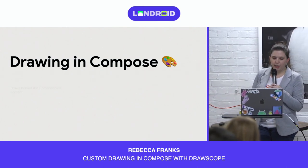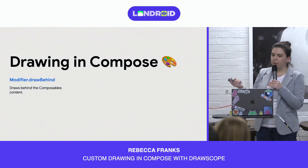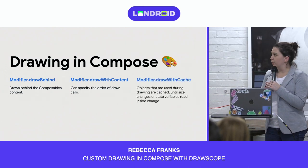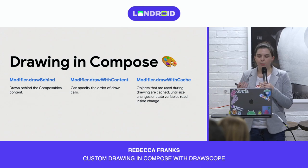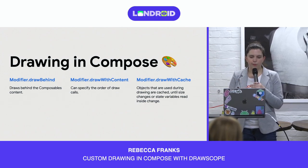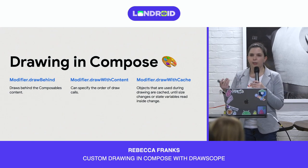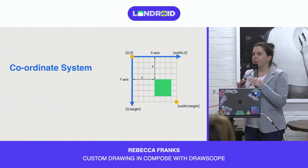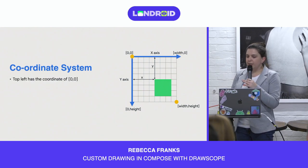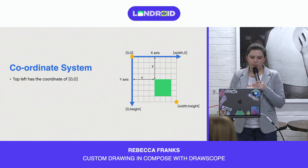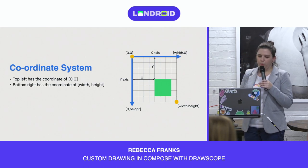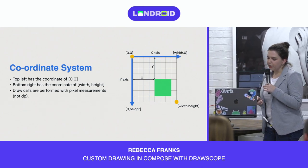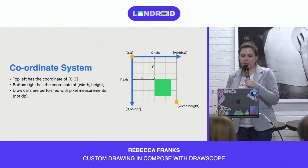Looking at these three modifiers: we have modifier.drawBehind, which draws content behind your composable; modifier.drawWithContent, which allows you to specify the drawing order of your calls; and modifier.drawWithCache, which allows you to cache objects created inside your modifier until the size or state variables read inside are changing. Coordinates start with 0,0 at the top left. The bottom right is the coordinates of width and height. The y value increases as it goes down, and x increases as it moves right.